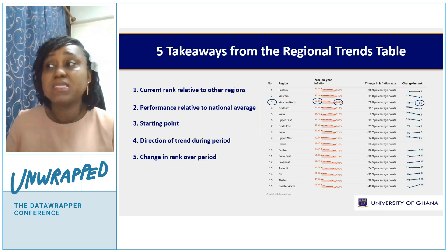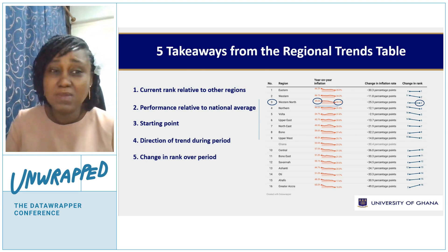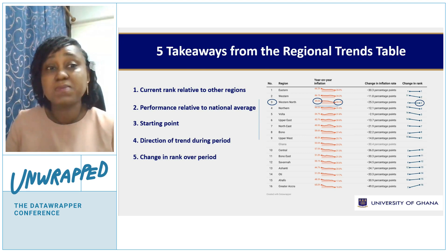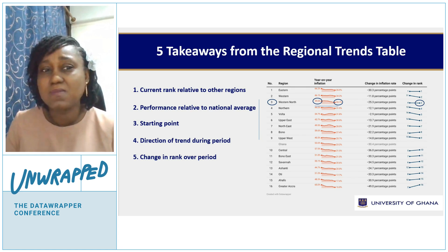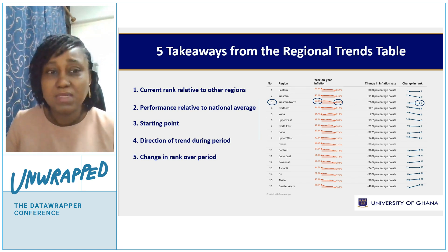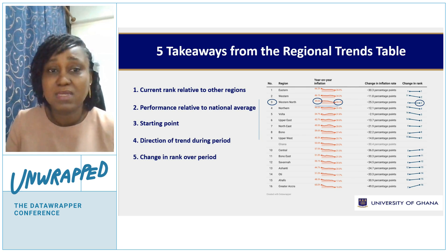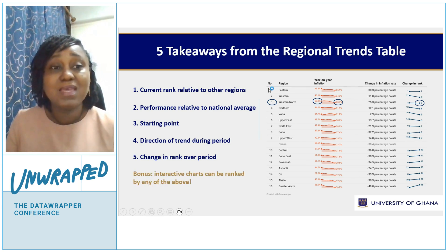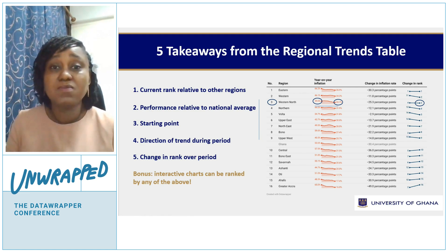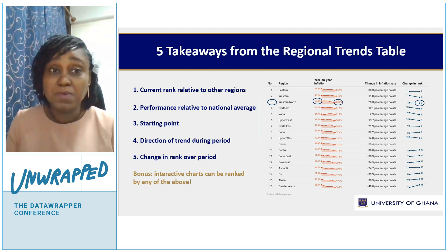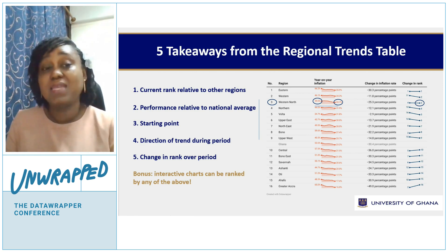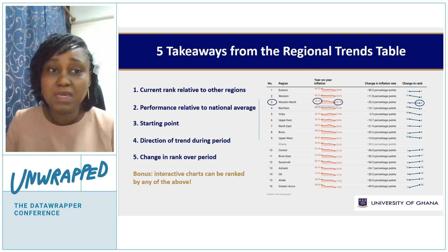This is because even though you see the starting values, it's difficult to ask people to look at starting values and figure out how they were ordered. When you add the ranking, it gives additional information. In the interactive version, the great thing is you can sort by any of these things — not just the ending points as this chart has been arranged.